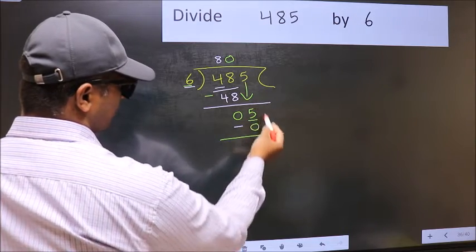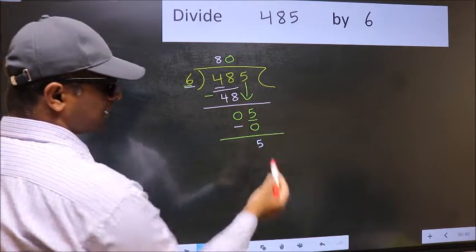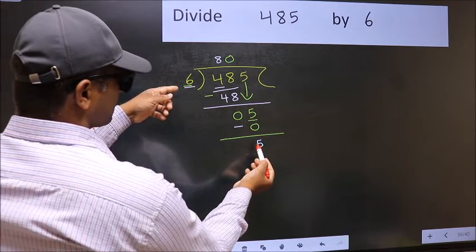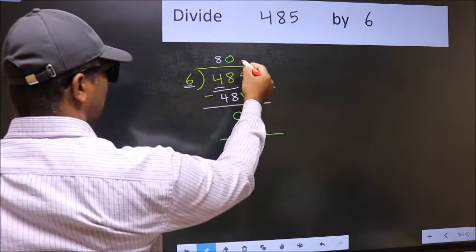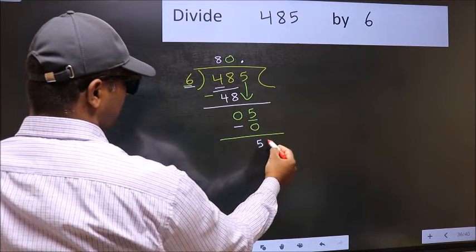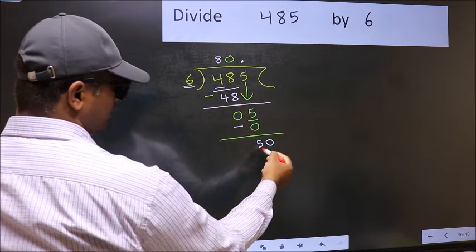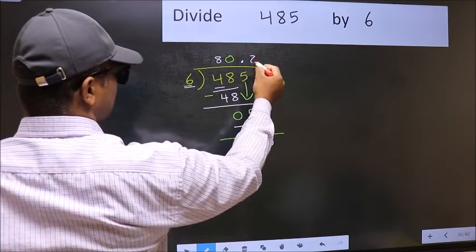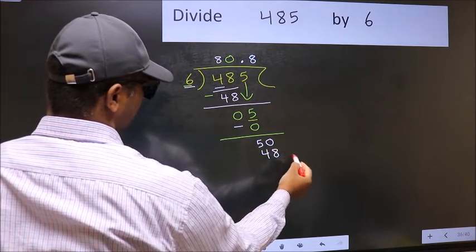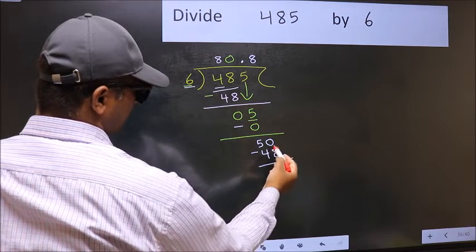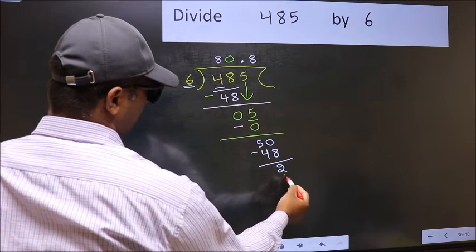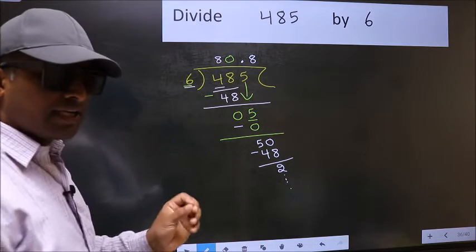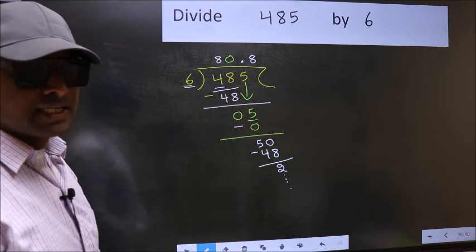Over here, we did not bring any number down, and 5 is smaller than 6. So now you can put the decimal point and take 0. So 50. A number close to 50 in the 6 table is 6 times 8, which is 48. Now you subtract. You get 2 and continue the division. I am not doing that. Did you understand where the mistake happens?